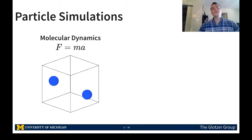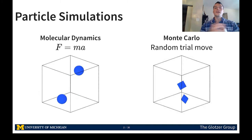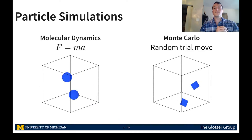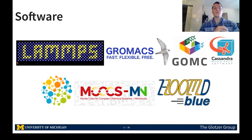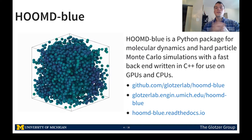We will discuss the two flavors that particle simulations generally come in: molecular dynamics, which evolves a system forward using Newton's equations of motion, and Monte Carlo, which uses a Markov chain to explore a system's phase space and find its equilibrium properties. Both techniques were developed in the 1950s and have since become very common. Today many programs exist to perform these simulations, such as LAMMPS, GROMACS, GoMC, Cassandra, OpenMM, MCCCS, MnTohi, and HOOMD-Blue, to name a few.